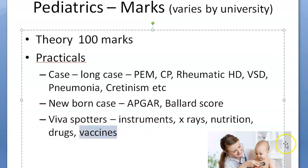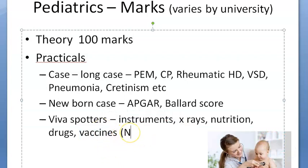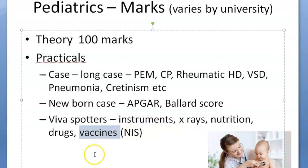Vaccines — they will ask you a lot, including varicella, etc. You should know the National Immunization Schedule very well. Apart from that, the extra ones in IAP like varicella, typhoid, and hepatitis A — just know the names and roughly when to give them. But the National Immunization Schedule you should know completely.